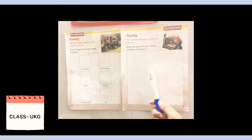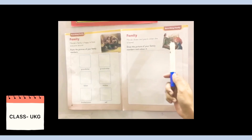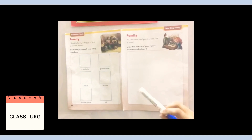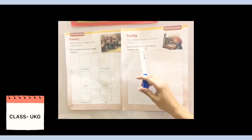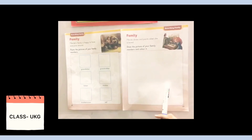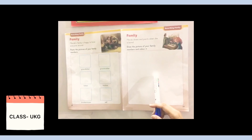Now let's look at the second activity. Merida draws and paints when she is bored. जब Merida bored हो रही होती है, तो वो drawing करती है and painting करती है. Draw the picture of your family members and color it. आपको अपनी family की picture draw करनी है and then उसको color करना है. इसके लिए you can take help of your father, mother, brother, sister. Right, students?